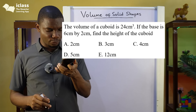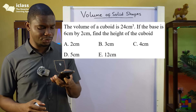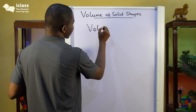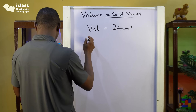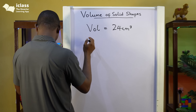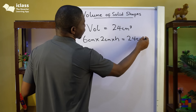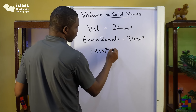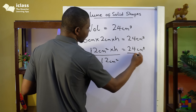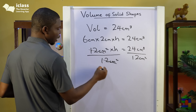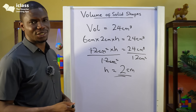Next question: the volume of a cuboid is 24 centimetres cubed. If the base is 6 centimetres by 2 centimetres, find the height of the cuboid. The formula is length times breadth times height. The length and breadth give us 6 times 2 equals 12 centimetres squared. So 12 centimetres squared times height equals 24 centimetres cubed. Dividing both sides by 12 centimetres squared gives us a height of 2 centimetres.